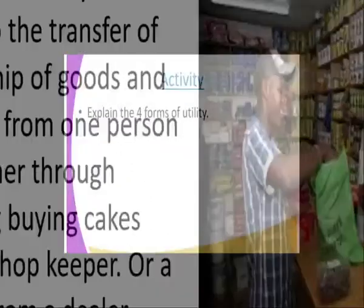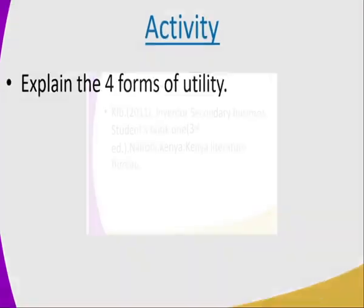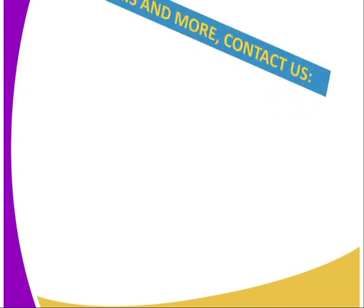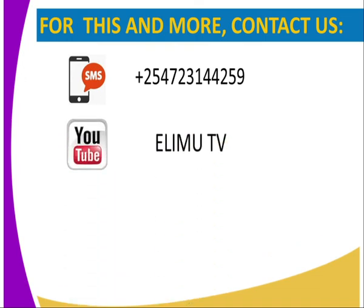That marks the end of our lesson. Activity: explain the four forms of utility. For reference, you can visit KERB 2011, Inventor Secondary Business Studies, book 1, third edition. If you have any questions, inquiries, or need additional notes, you can reach us through SMS, YouTube, Facebook, or Twitter.